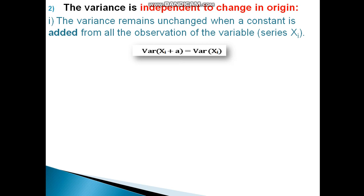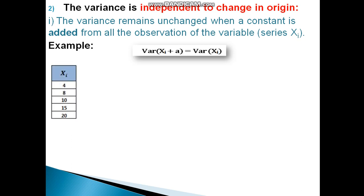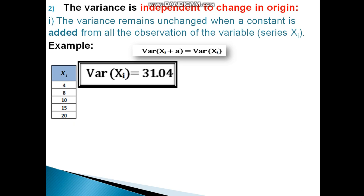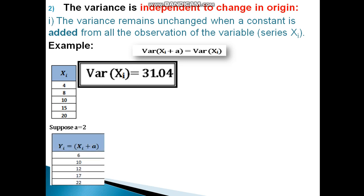For example, we change the variable X. Suppose a constant a is given as 2. We define yi equal to xi plus a. So: 4 plus 2 is 6, 8 plus 2 is 10, 10 plus 2 is 12, 15 plus 2 is 17, 20 plus 2 is 22.